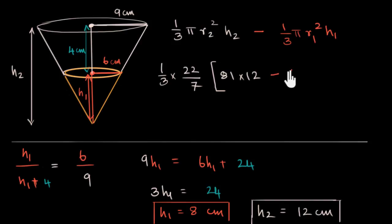r1 squared, which is 6 squared—that's 36—36 into h1, which is 8 centimeters, into 8. Now you can notice everything here is a number. Whatever you get in centimeters cubed will be the answer. Now you can go ahead and do this calculation. I just did the calculation and what I got was 716.57 centimeters cubed.